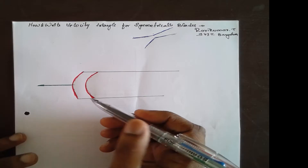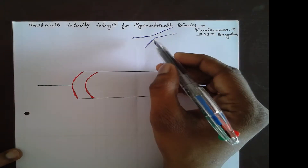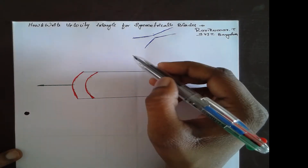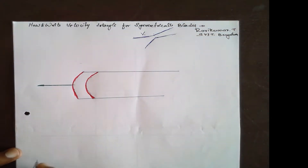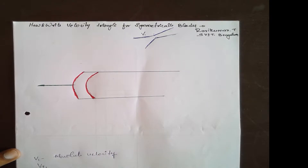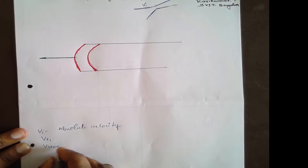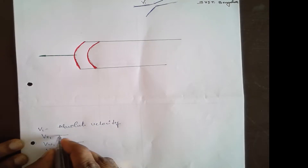Before writing the symmetrical blade velocity triangle, we should know the velocity components. When water comes out of the nozzle, that velocity is called absolute velocity, v1. If you resolve v1 in three mutual perpendicular directions, you will get vr1, v_omega1, and vf1 (or va1).